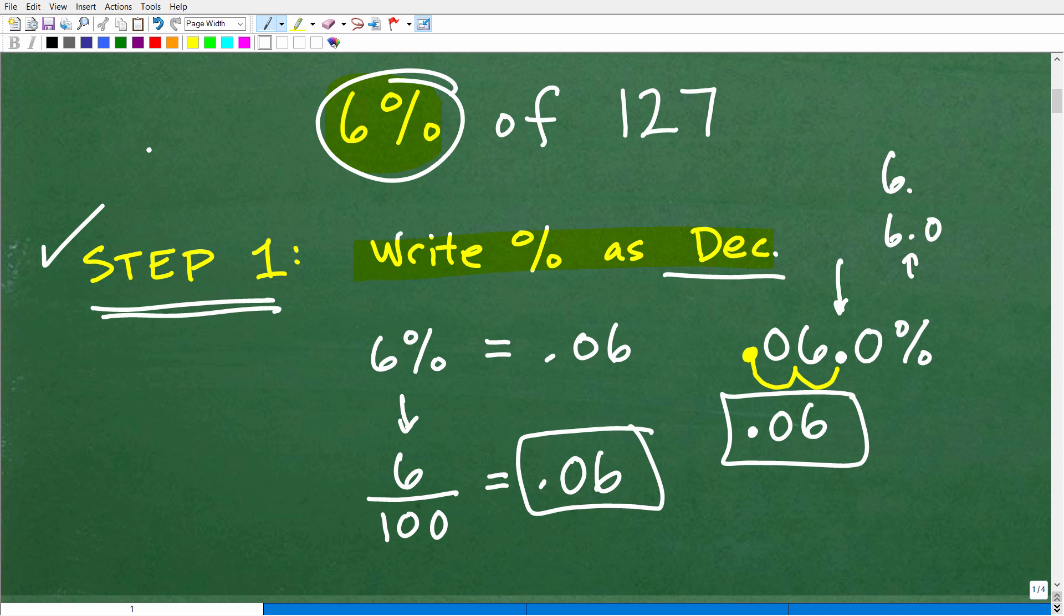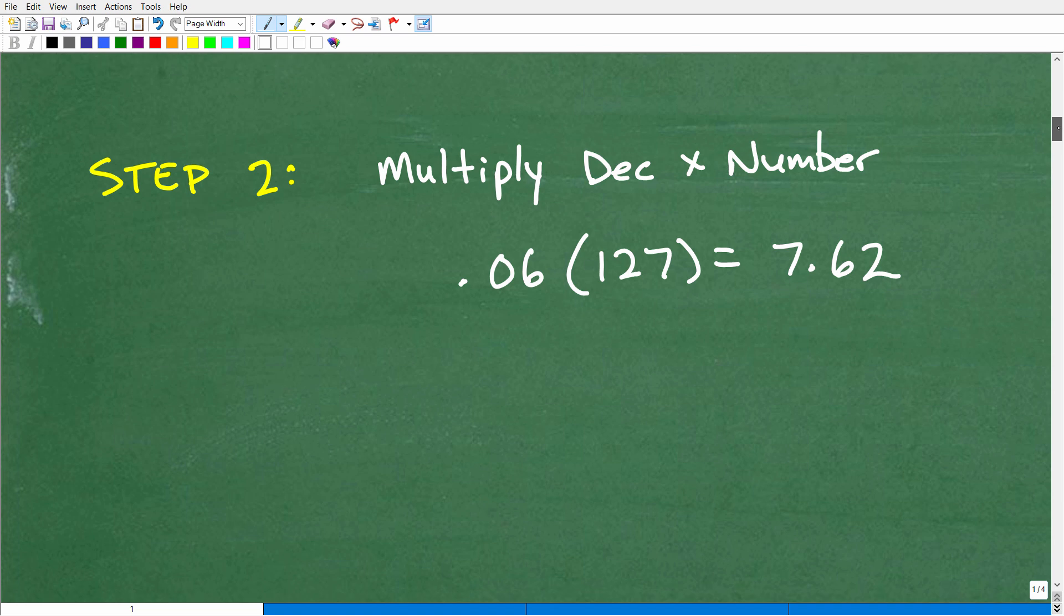Okay, so what do we do with that? Well, step two is we're going to take that decimal, okay? We went from a percent to a decimal. We're going to multiply that decimal. In this case, again, it's 0.06 by the number, okay? And the number we're talking about here is 127. Remember, we want to find 6% of 127. So after we changed our percent to a decimal, we're going to multiply by the number, and this is where your calculator comes in handy. So 0.06 times 127, we get 7.62, and this is the answer, okay?